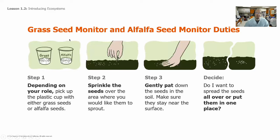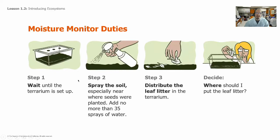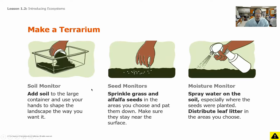Two people would make decisions on the two different types of seeds — grass seeds and alfalfa seeds — either sprinkling them over the whole thing or putting them all in one place, then gently patting the seeds into the soil near the surface. Once the terrarium is set up, spray the soil with water where the seeds were planted — about 30 sprays per terrarium. Then distribute the leaf litter either over the whole thing or over just part of it. So in summary: add soil, sprinkle the grass and alfalfa seeds, then spray water and distribute leaf litter across the top.